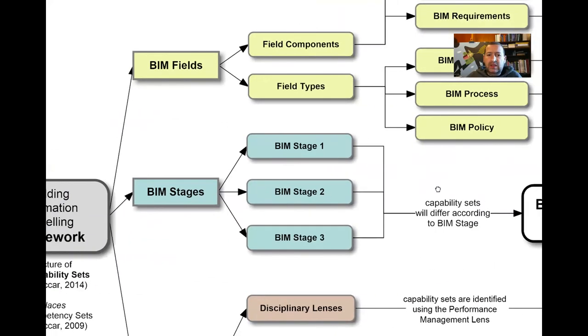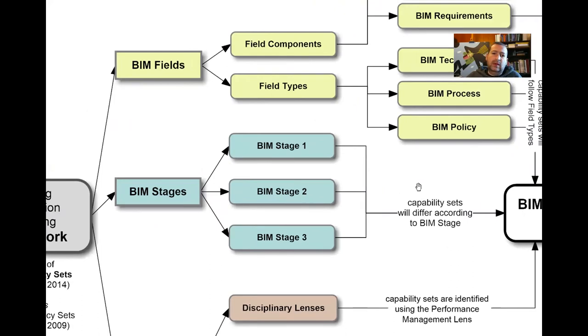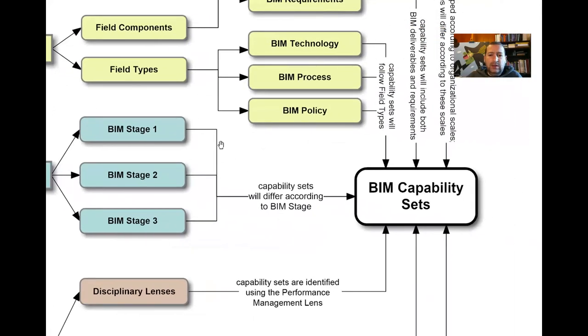If you look at BIM stages, we also have three stages: BIM stage one, which is modeling, then stage two, collaboration, and three, integration. These three are represented within BIM capability sets and steps, meaning we've got capability sets covering each of these stages and the transition between them.